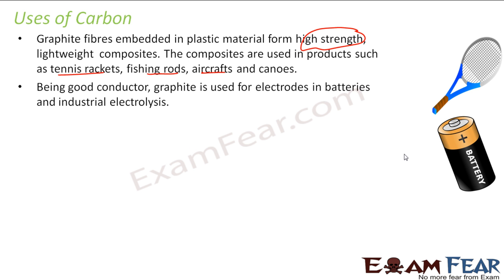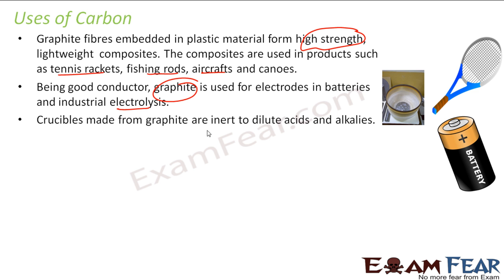Carbon in the form of graphite is used in batteries, and also it is used for electrolysis in the industry. It is also used to make crucibles, because graphite has a very high melting point.